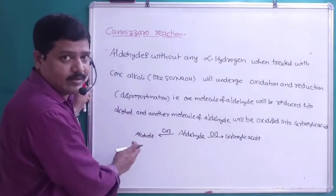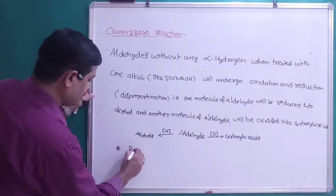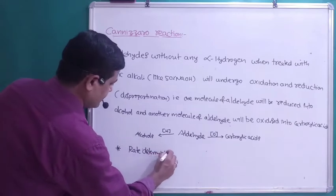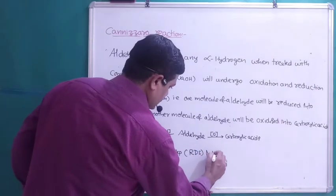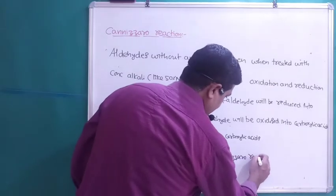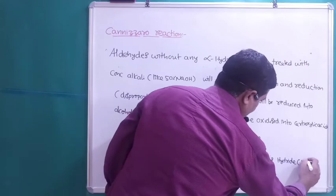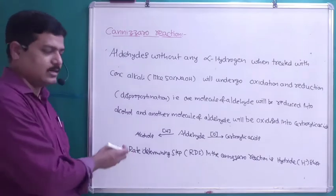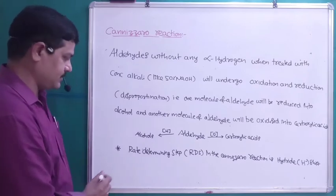When aldehydes are reduced, the next stage is we will get alcohols. One important step in the Cannizzaro reaction is the rate determining step, in short form called RDS. In the Cannizzaro reaction, the RDS is the hydride shift, that is the H⁻ shift. For example, we will take benzaldehyde, C6H5CHO — the CHO group is attached with the benzene ring.